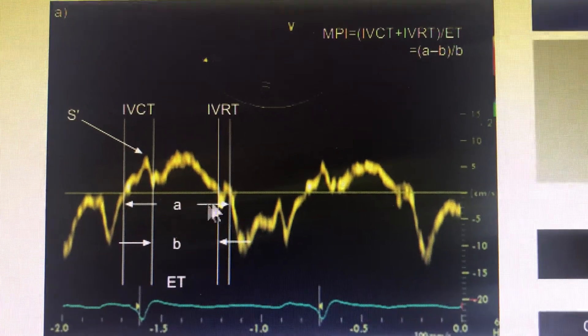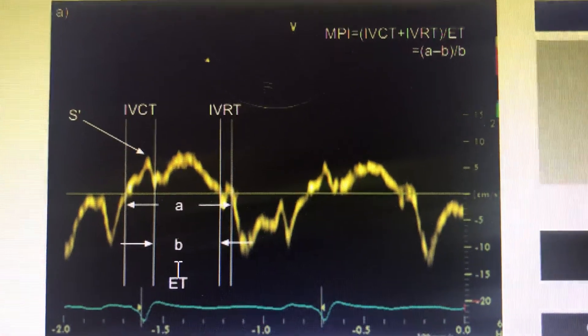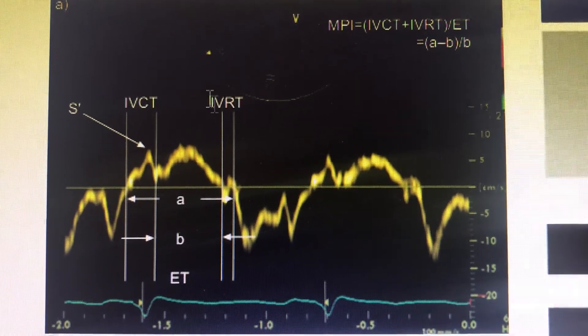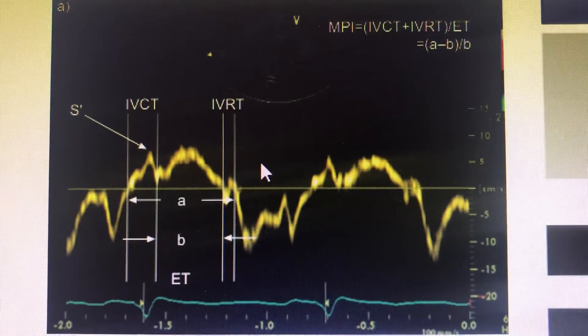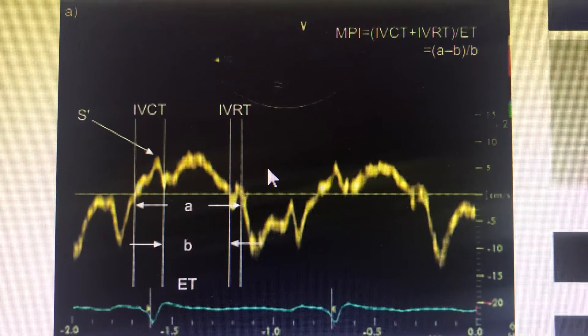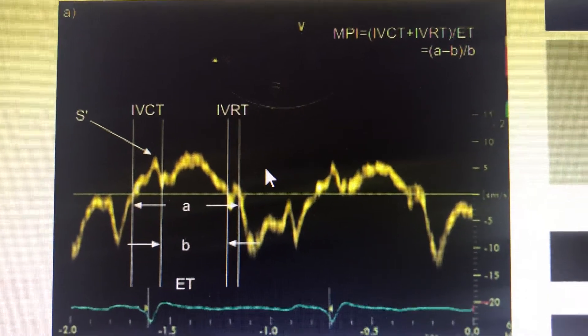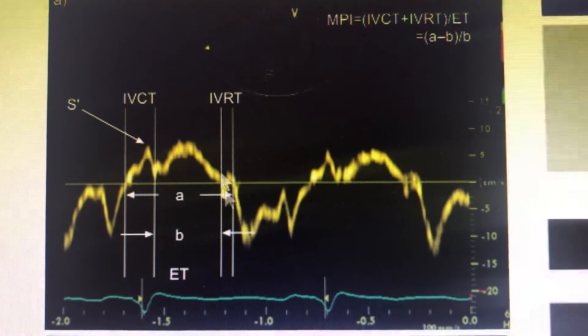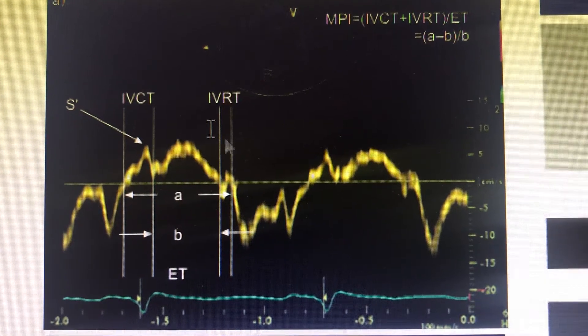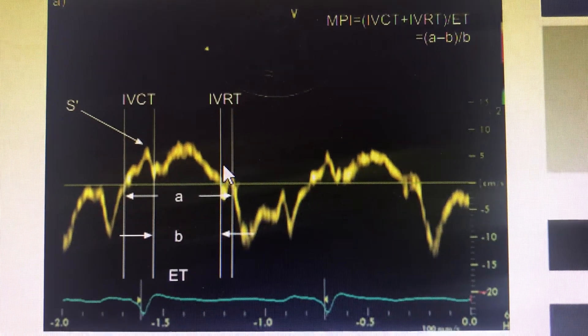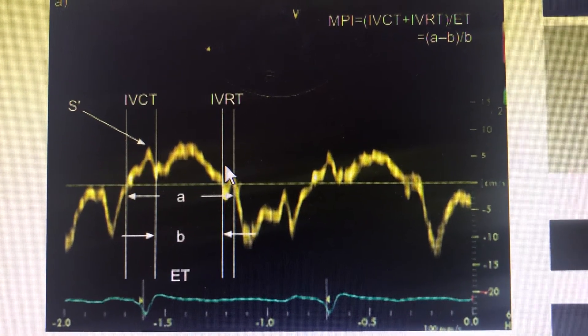As the ejection time increases, MPI decreases. If IVCT or IVRT increases, MPI increases. Lower MPI is better—ejection time should be greater compared to IVCT or IVRT. This indicates effective contraction and relaxation are happening.